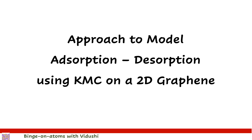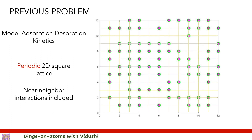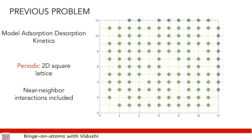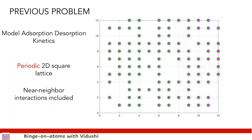In my previous video I was modeling adsorption and desorption on a 2D square lattice. That lattice was represented by a matrix called L, which stored sites where atoms were adsorbed. What we did not model was the surface of the adsorbate — we assumed its existence and incorporated its influence in the rate constants, but we did not model the atom locations of the adsorbate.